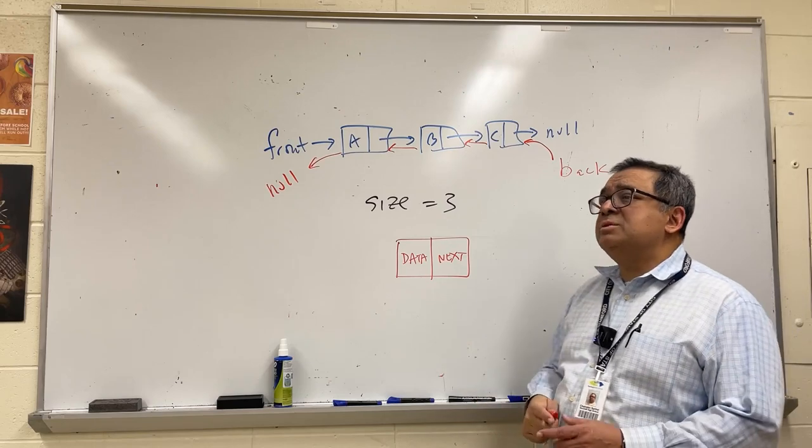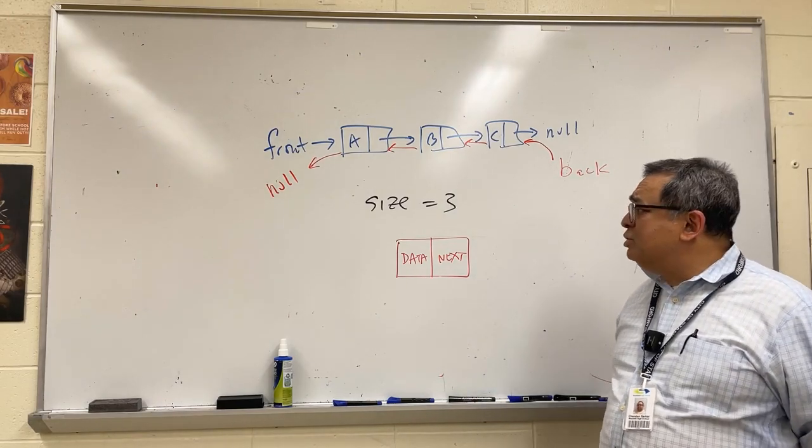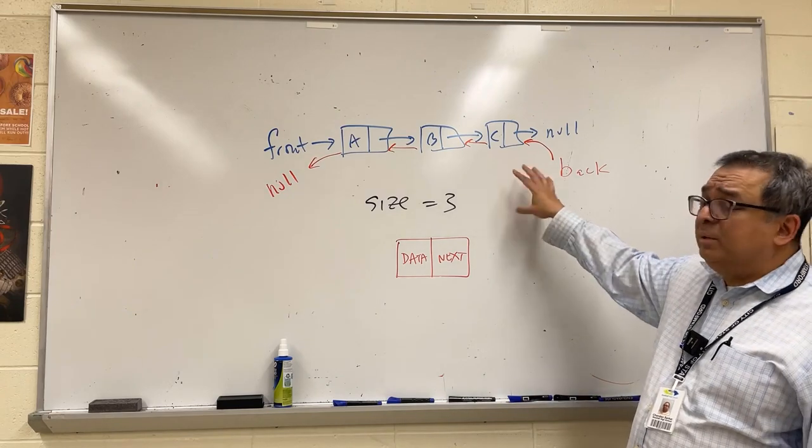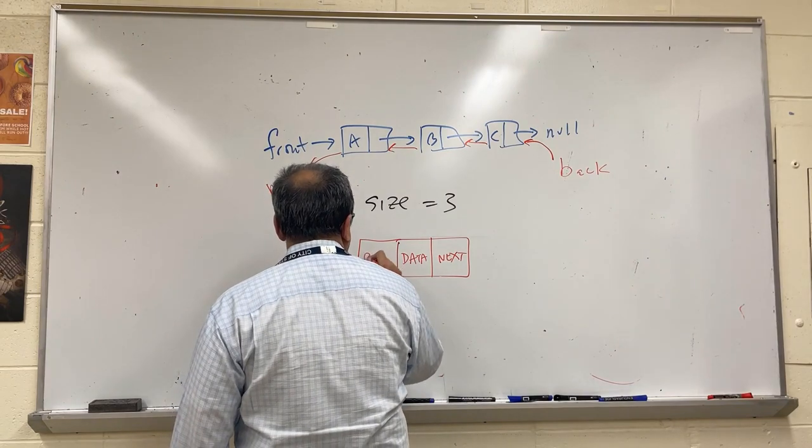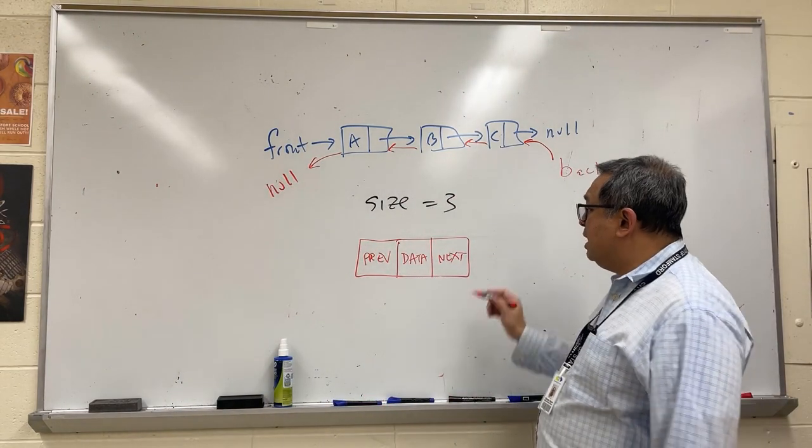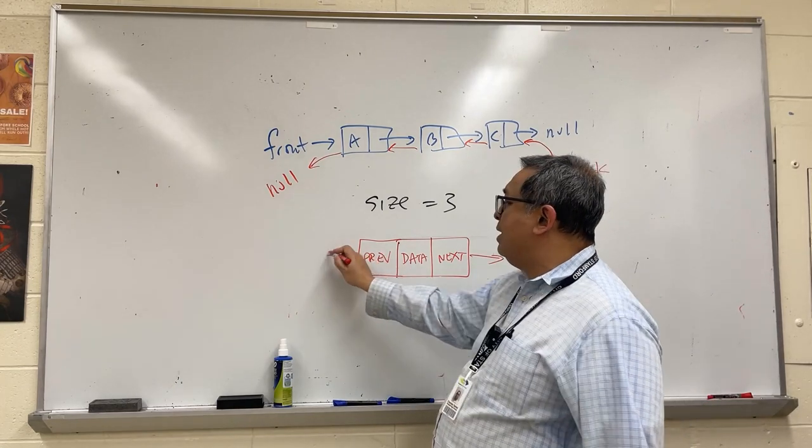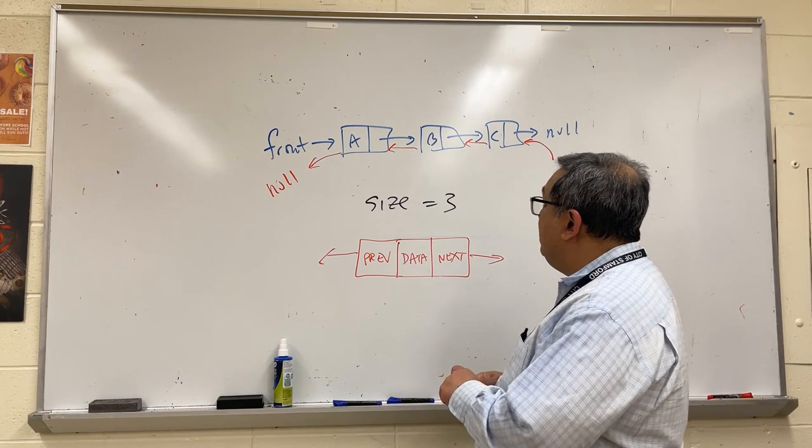Please discuss with your partner again. What do you think the node structure will look like in a doubly linked list? Okay, so there would be another thing here. Very good, there would have to be a previous here like that. So basically it's got a pointer that goes this way, and it's got a pointer that goes that way.